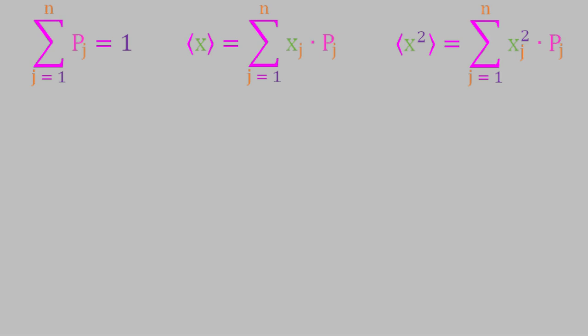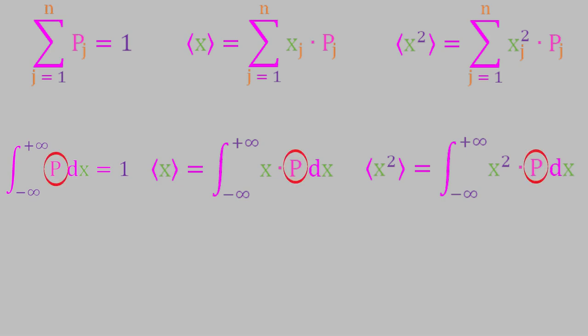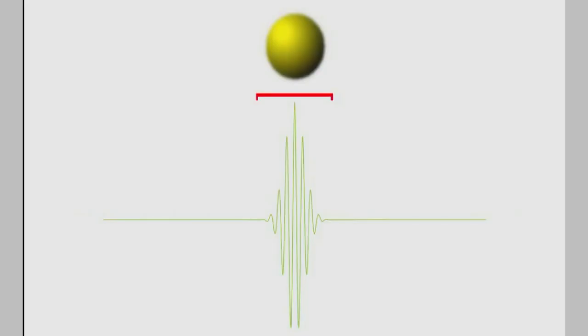For example, here are the three equations we saw when working with the expectation values a few minutes ago. If we want to calculate the expectation value of a continuous property like the position, we'll change the summations to integrals, which gives us these. Notice the main differences between the two sets of equations. First, because we're no longer taking a summation, we don't need a subscript on the probability or on the property we're finding the expectation value of. Finally, notice that the limits of the integral are negative and positive infinity. That's because the system we're studying is always described by a wave function, and a wave function is spread throughout all of space.